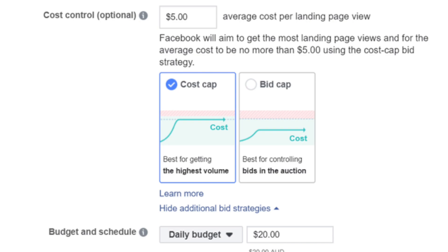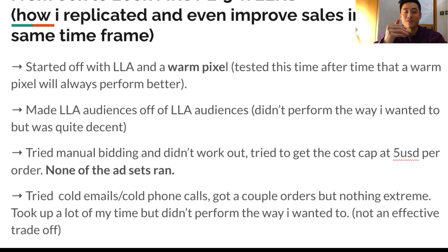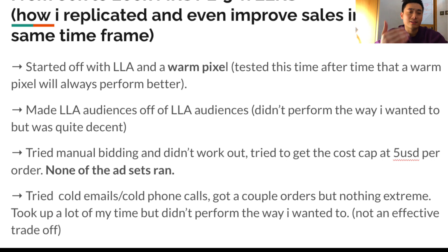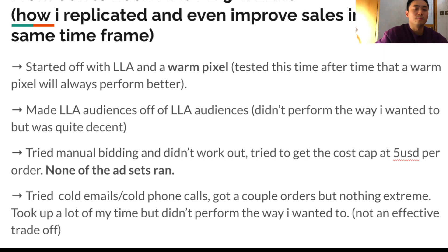I also tried manual bidding, setting the cost cap to around $5 USD per purchase, which is a very good indicator of a winning product. Low cost per purchase and high ROAS - that's dropshipping heaven. I also tried cold emails and cold phone calls, got a couple of sales, but it wasn't an effective trade-off of time to result. I wanted to focus more on retargeting, email marketing, and SMS marketing instead.